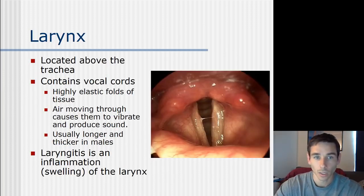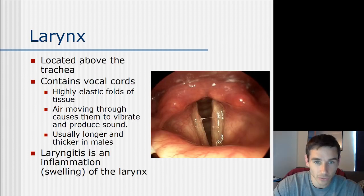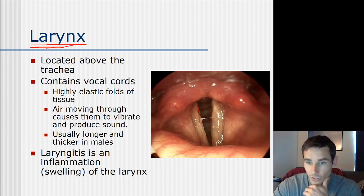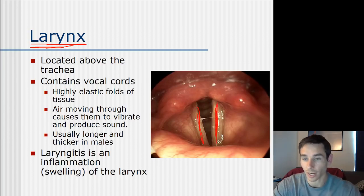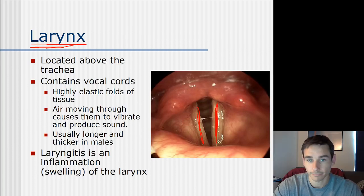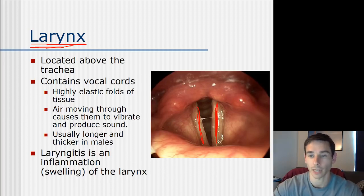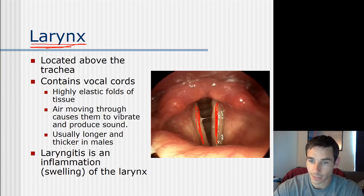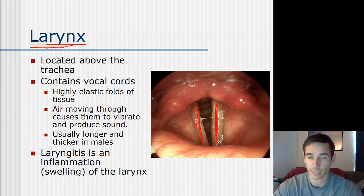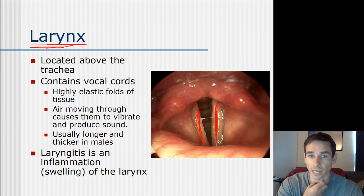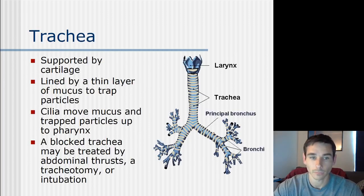Once past the epiglottis, you reach the larynx - your voice box - which contains two vocal cords that vibrate when you talk. Air passing by causes them to vibrate, and you control how close or far apart they are to produce different pitches. Laryngitis occurs when the vocal cords become inflamed from overuse, causing them to swell up so that talking becomes difficult and painful.